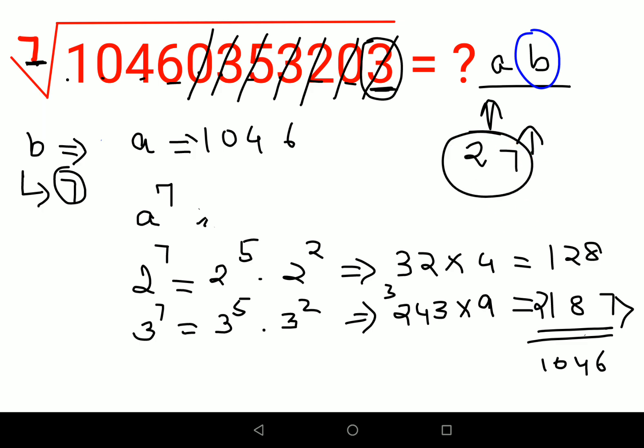Since a=2 and b=7, the answer to this question is 27. The key condition to remember is that this method only works when the question specifies that the answer is a proper integer. If that condition were not given, this method would not be applicable.